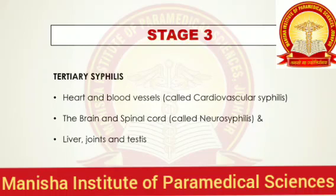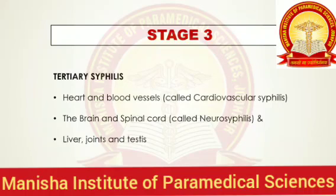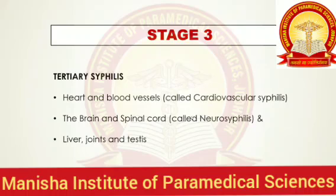The third stage is called tertiary syphilis or systemic tertiary syphilis. This stage affects various organs like the heart and blood vessels, the brain, spinal cord, liver, joints, and testis. When syphilis affects the heart and blood vessels, we call it cardiovascular syphilis. When it affects the brain and spinal cord, we call it neurosyphilis.